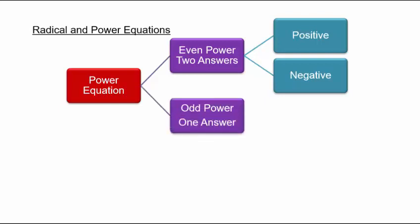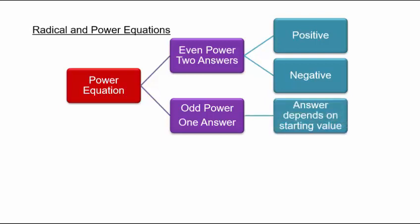If you have a linear expression to an odd power, like x cubed equals 8 or x cubed equals negative 8, the cube of a number retains its sign. So if x cubed equals 8, you only get a positive answer: x equals 2. If x cubed equals negative 8, you get x equals negative 2. The sign depends on the starting number.